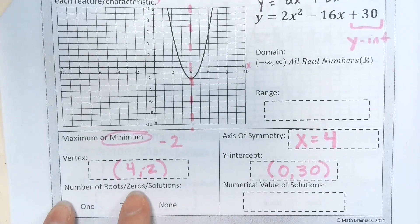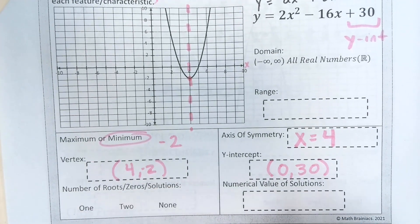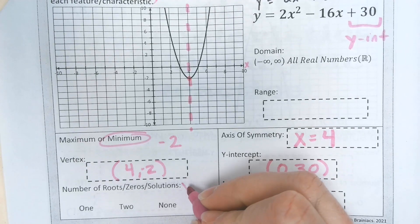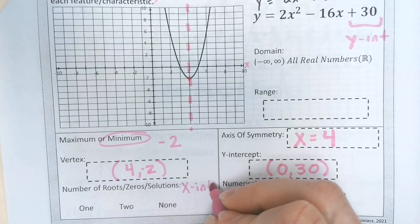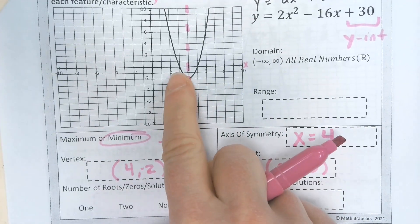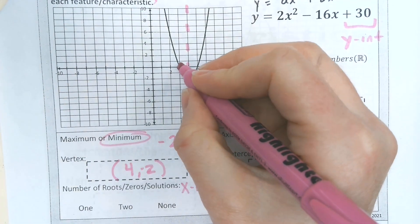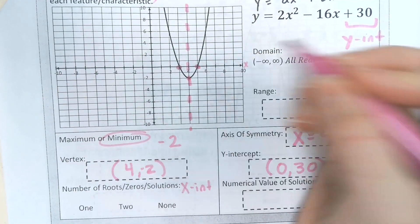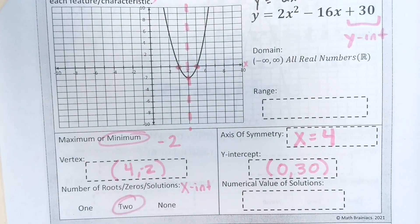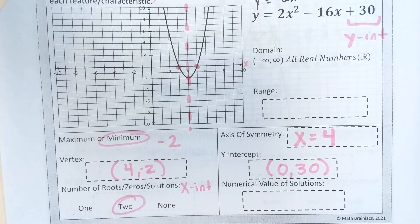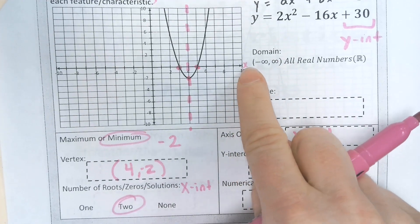Number of roots, zeros, or solutions. Remember that's your x intercept. You actually have two of them here. There's one and there's one. So we have two. If it never crosses the x axis, you would say it's none.